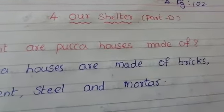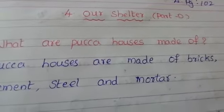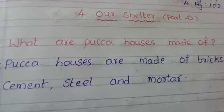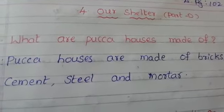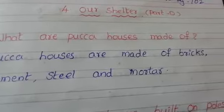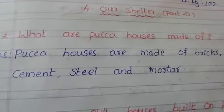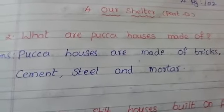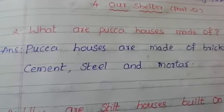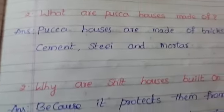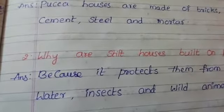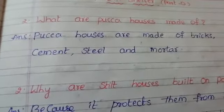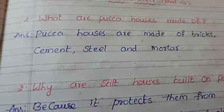What are pukka houses made of? Pukka houses are made of bricks, cement, steel and mortar.